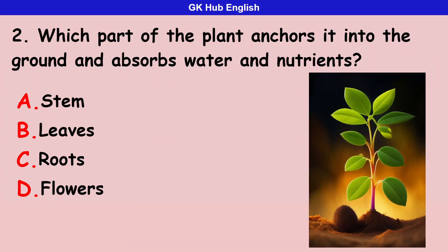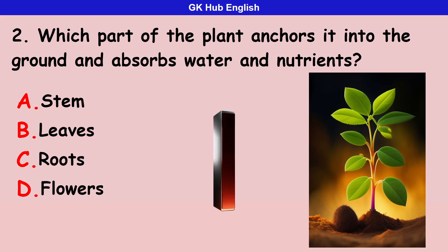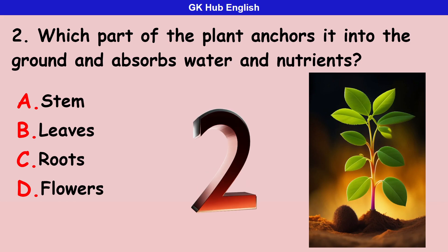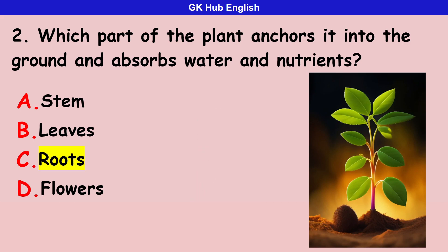Second question: which part of the plant anchors it into the ground and absorbs water and nutrients? Option A is stem. Option B is leaves. Option C is roots. Option D is flowers. Correct answer is roots.